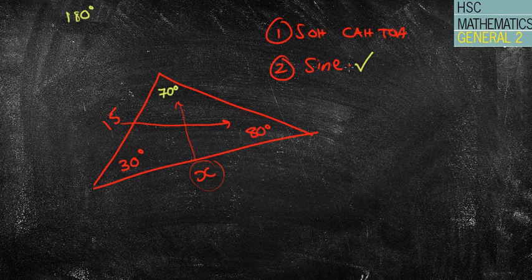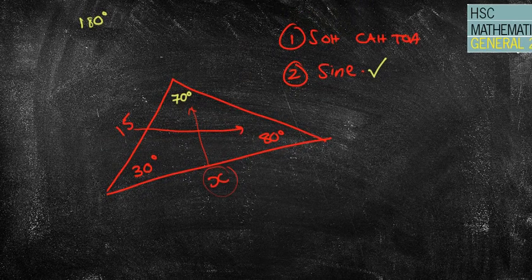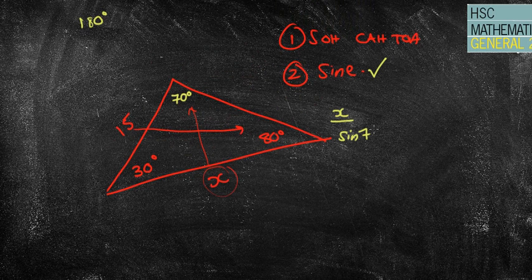So, you've got to be careful. Sometimes they try and trick you by making you think it's not the sine rule, when in fact it is. Just a little thing to think about, because once I've got that amount, all I'll be doing from there is doing my x over sine 70 equals 15 over sine 80.